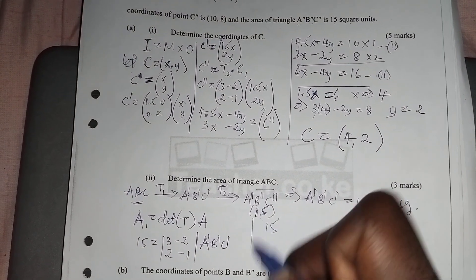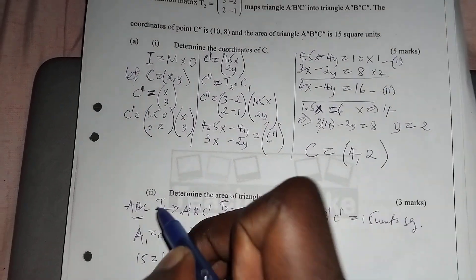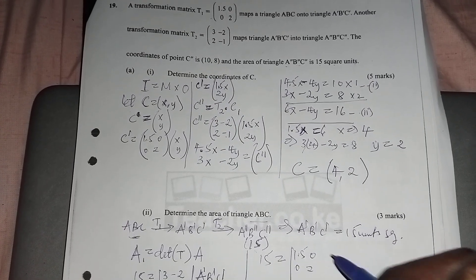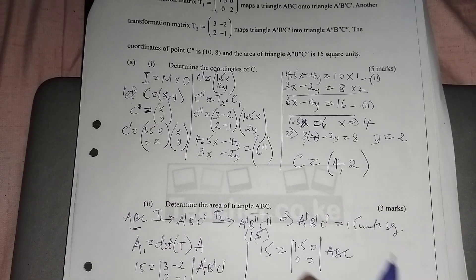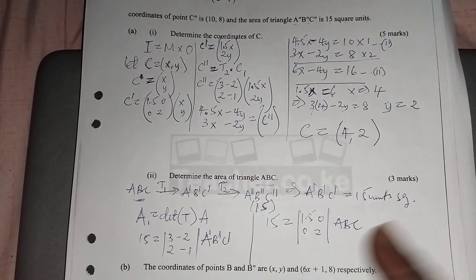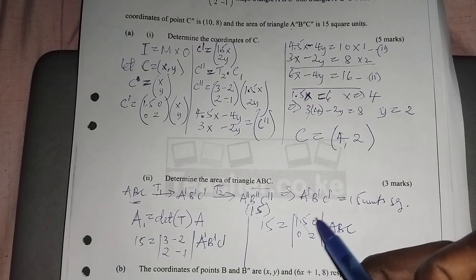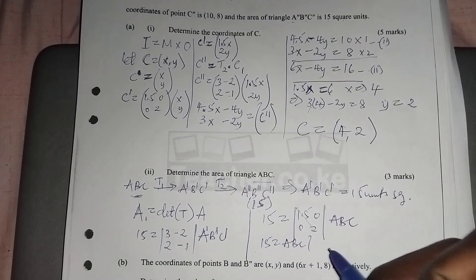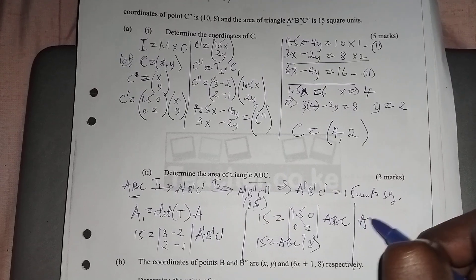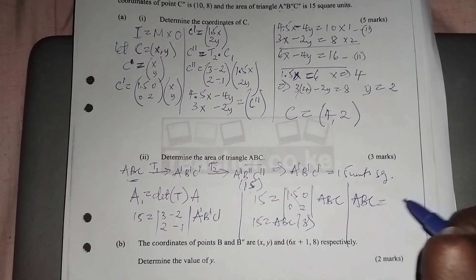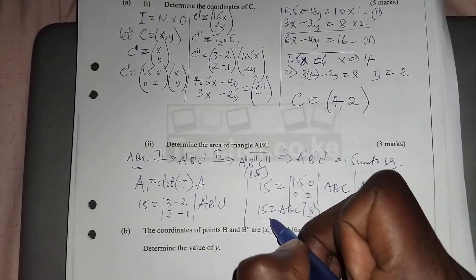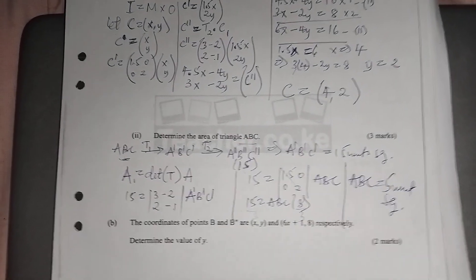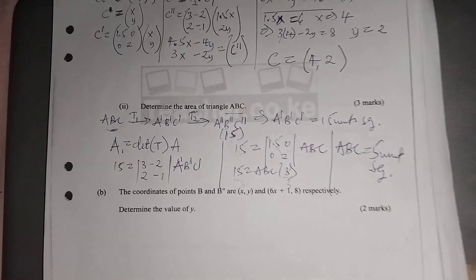Now using the determinant of T1, which is [1.5, 0; 0, 2], the determinant equals 1.5 × 2 = 3. So we have 15 = 3 × area of triangle ABC. Therefore the area of triangle ABC equals 15 divided by 3, which is 5 square units.